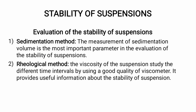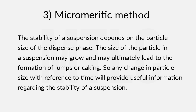The third one is the micrometric method. In the micrometric method, suspension stability is assessed by particle size of the dispersed phase. Over time, particle size will grow, lumps will form, and caking will be formed. So the particle size changes with respect to time, which indicates a suspension stability problem.